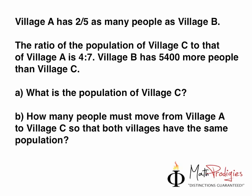I know what you're thinking — such a long question! Breathe. Village A has two-fifths as many people as village B. Next clue: the ratio of the population of village C to that of village A is 4 to 7. Village B has 5,400 more people than village C. Question A: what is the population of village C? Question B: how many people must move from village A to village C so that both villages have the same population — in other words, the ratio is 1 to 1?